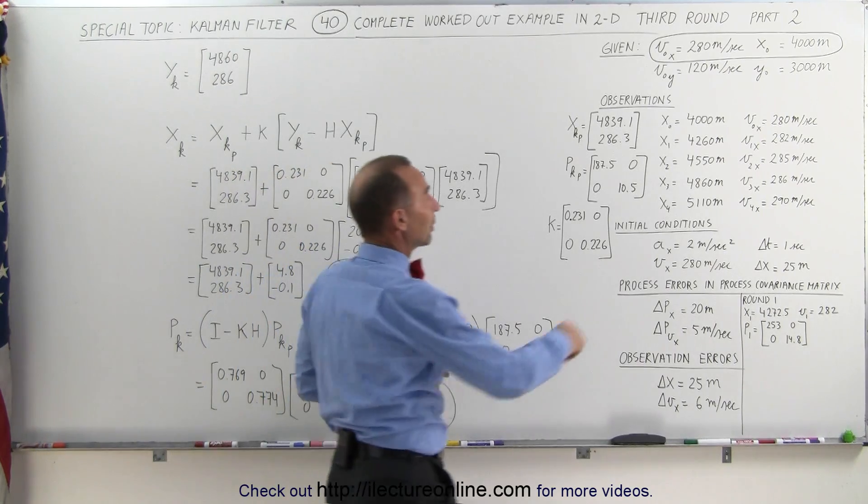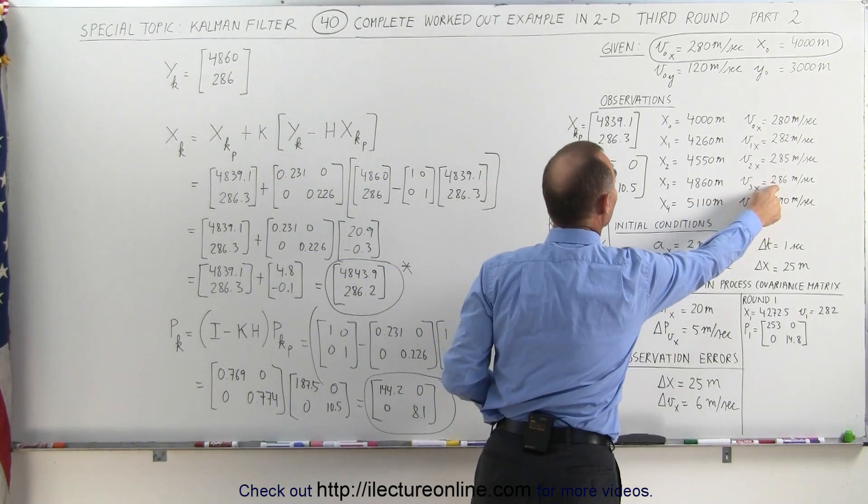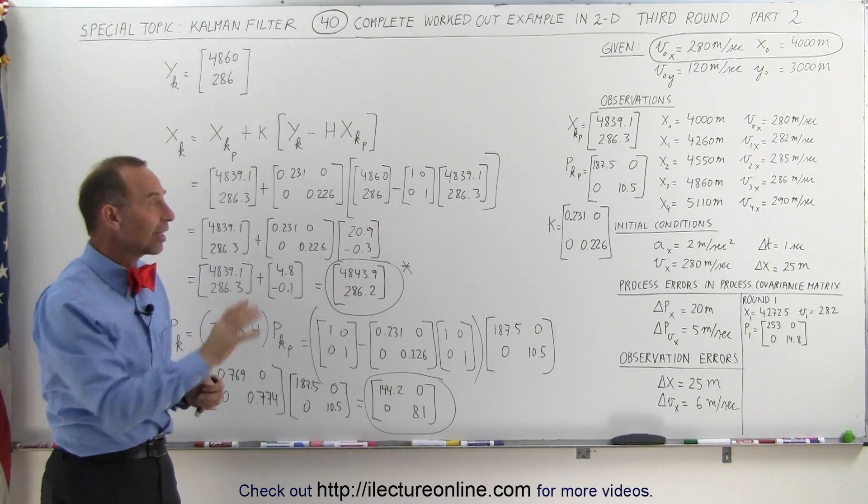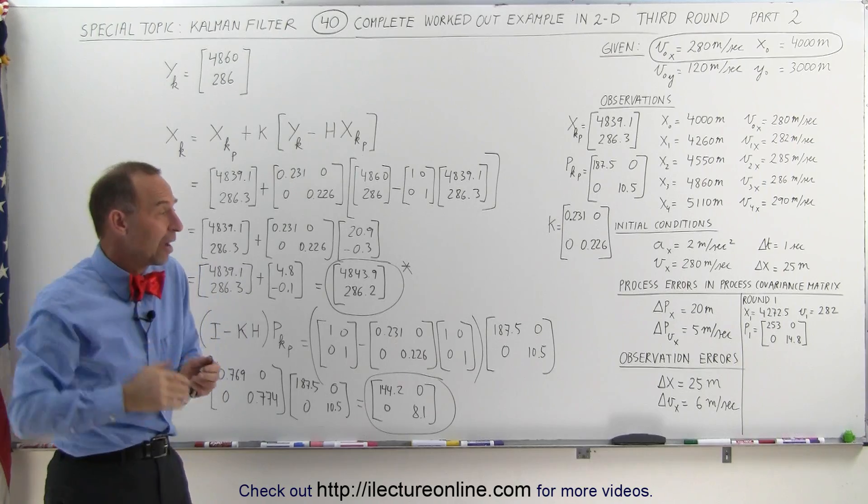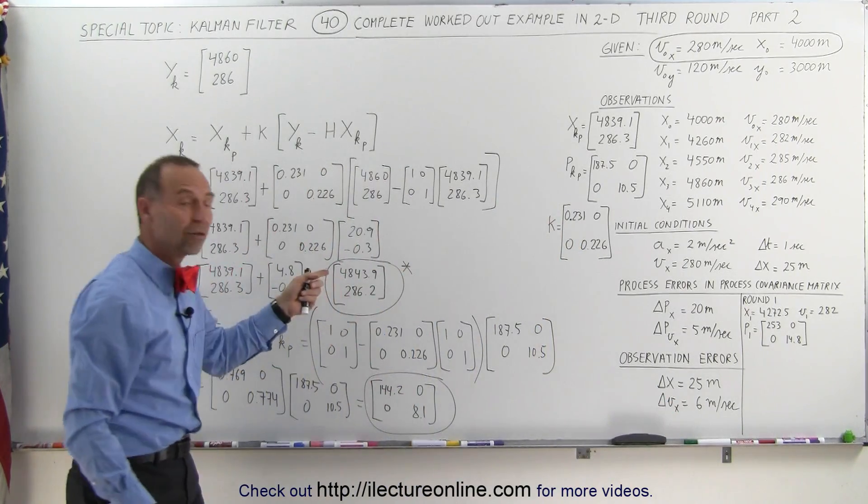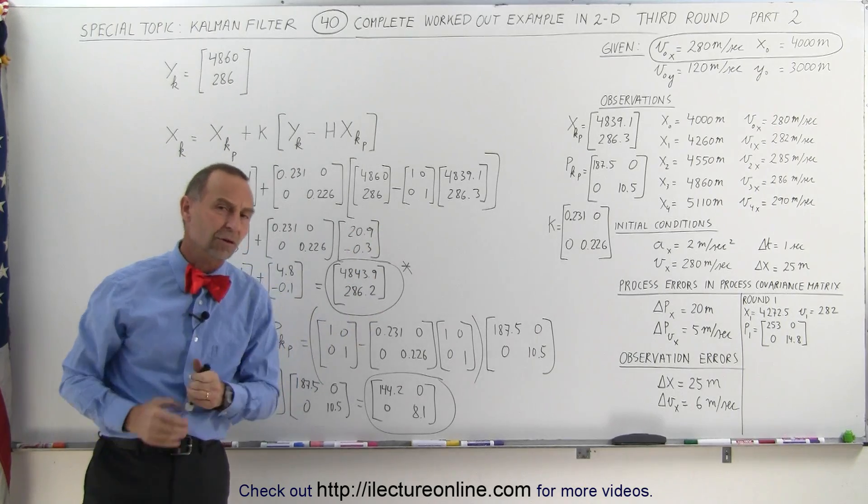The measured values for round 3 were 4860 and 286. So we're not very far off from the measured values, but it should give us slightly better values than the measured values because there was a lot of assumed error in the observations. So we're going to trust these numbers more than we're going to trust our observations.